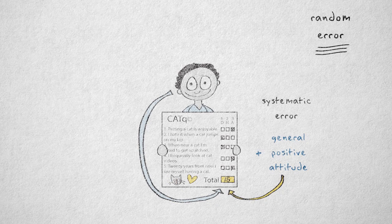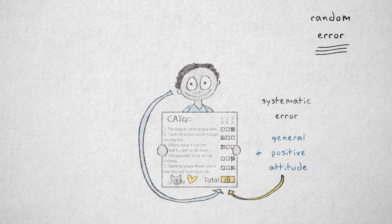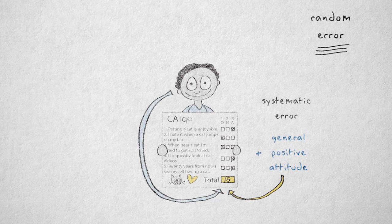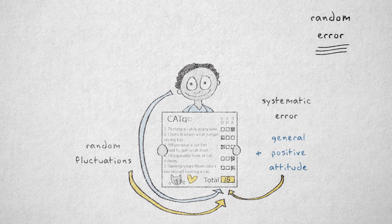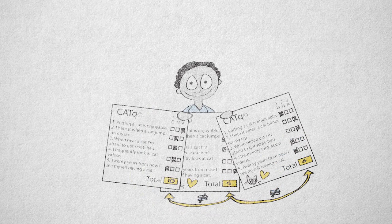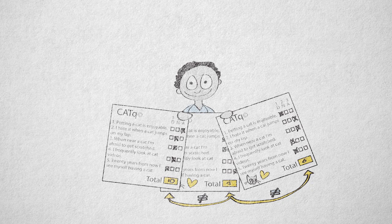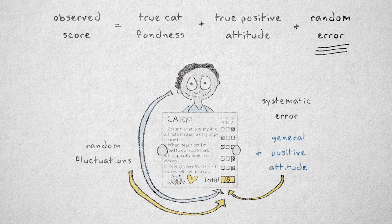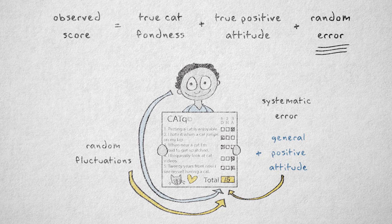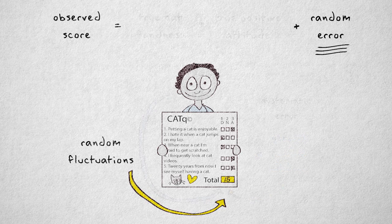Reliability is influenced by random error, error that's entirely due to chance. If the observed score is in part determined by random fluctuations, then we get different values each time we measure the same person. If a scale is entirely unreliable, if there's no association between observed scores at different measurement moments, then we're basically measuring random error or noise.